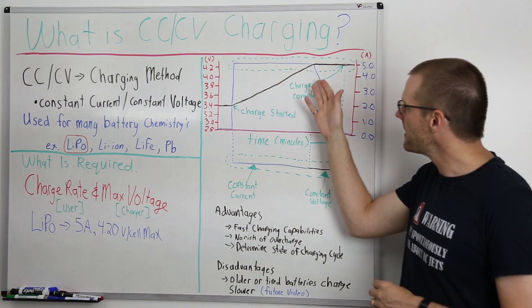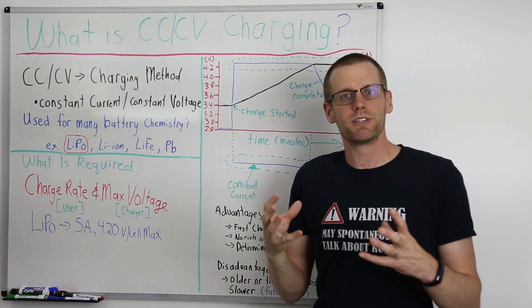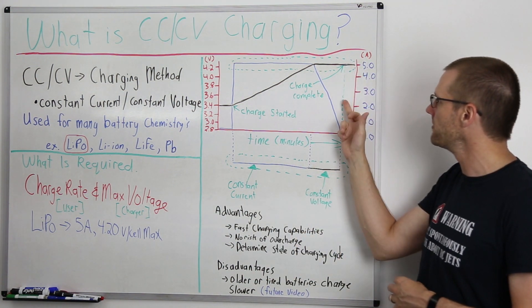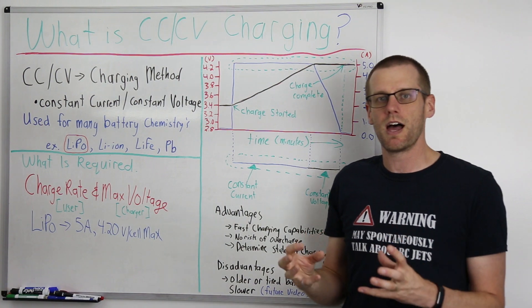Once that battery cell ends up hitting the 4.2 volts, it pretty well stays there for the rest of the charge where the charge is actually terminated, where you see this green dashed line.